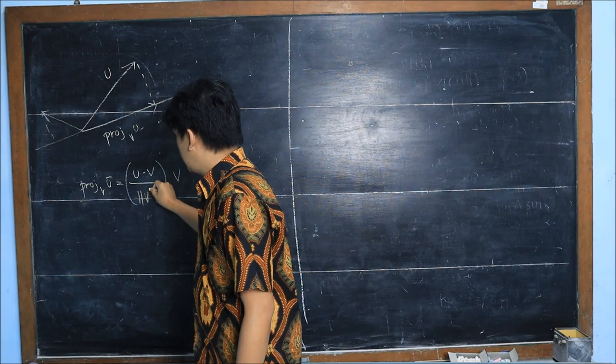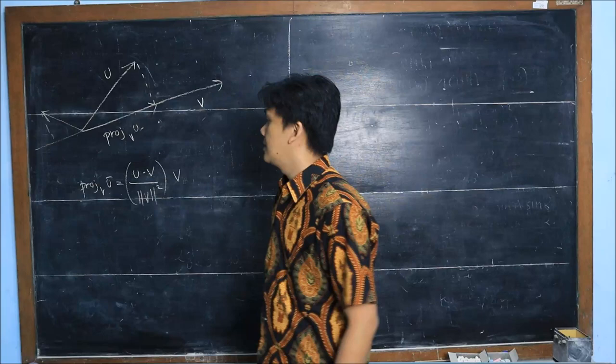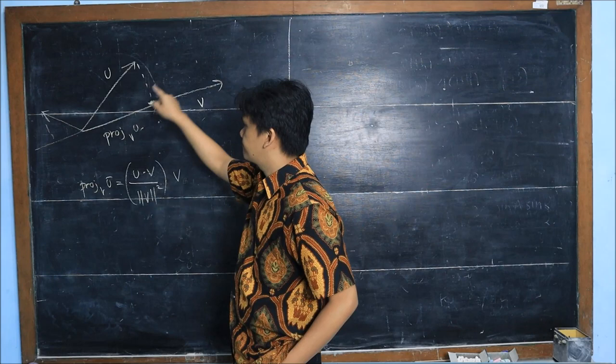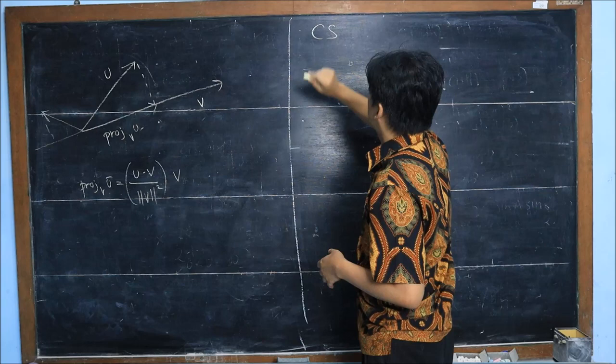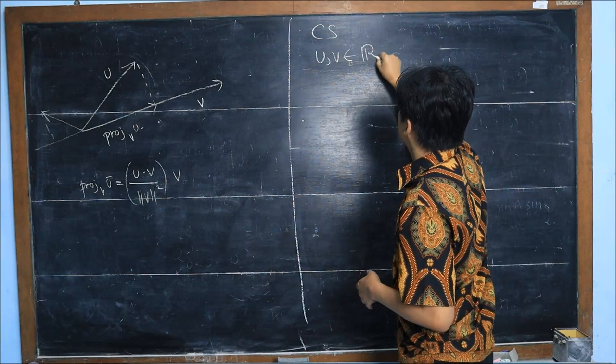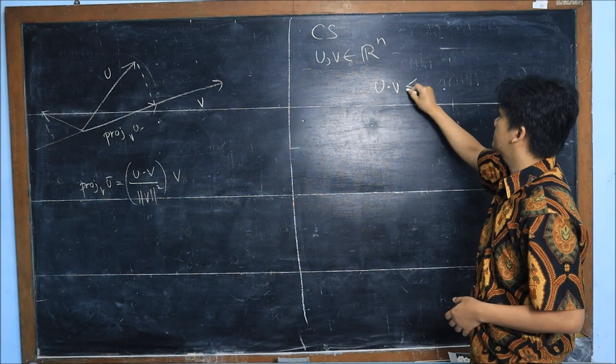Before we prove the Cauchy-Schwarz inequality, let me remind you what is the statement. The Cauchy-Schwarz inequality states that if u and v are vectors in R^n, then the dot product of u and v is less than or equal to the length of u times the length of v.